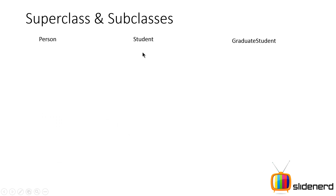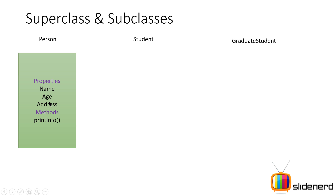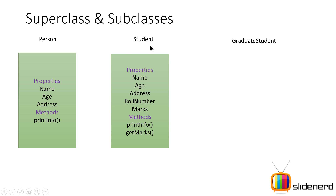The first thing we have is three different classes: Person, Student, and GraduateStudent. Person has properties like name, age, and address, and a method called printInfo which prints all that information. Student is a subclass of Person — it inherits name, age, and address from Person, and adds its own properties like roll number and marks. It also inherits printInfo and has its own getMarks method.